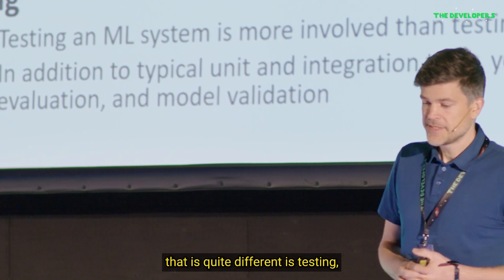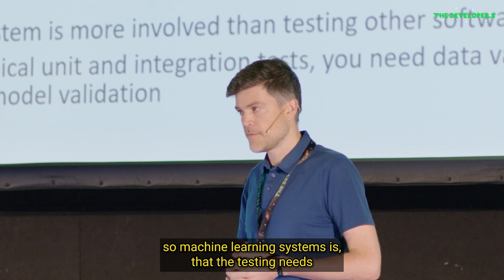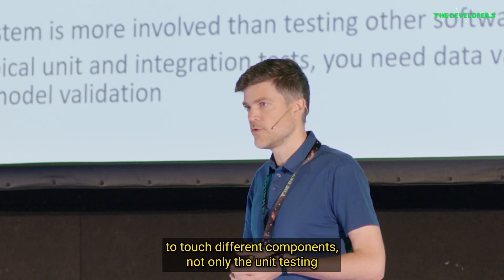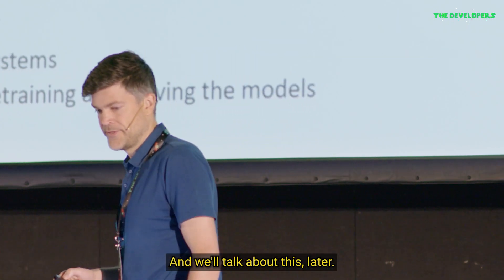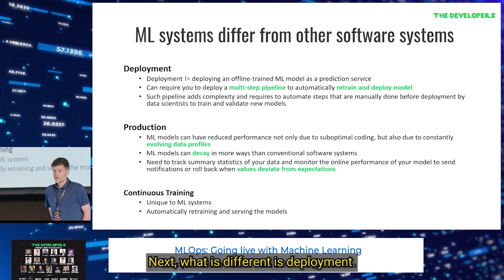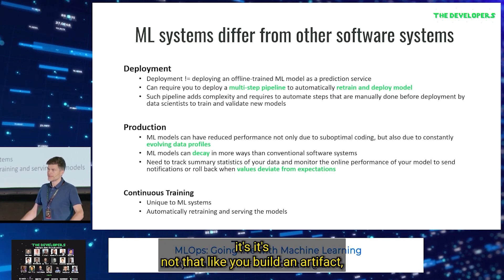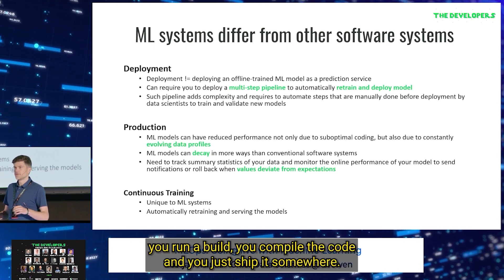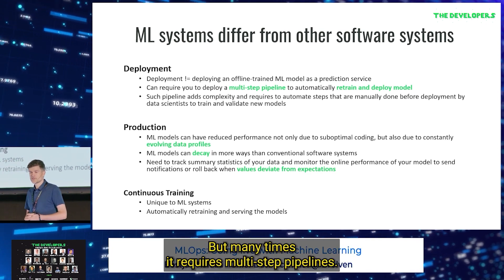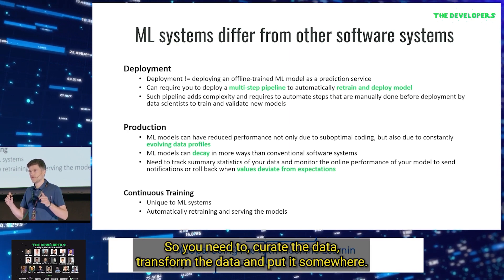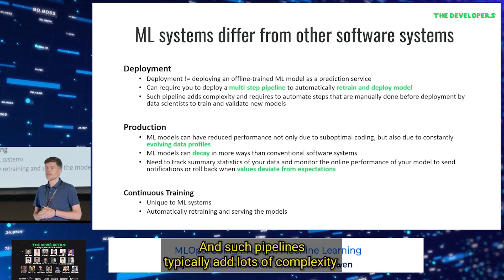The next difference is testing. Machine learning systems require testing to touch different components — not only unit testing, but also the data and the model. Next, what's different is deployment. In machine learning, it's not that you build an artifact, compile the code, and ship it somewhere. Many times it requires multi-step pipelines — you need to curate the data, transform the data, put it somewhere — and such pipelines typically add lots of complexity.